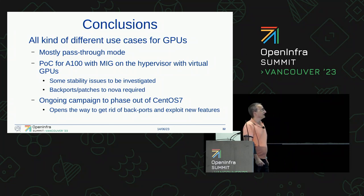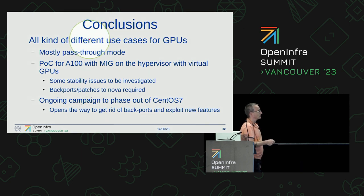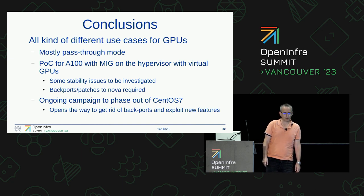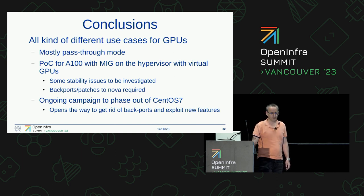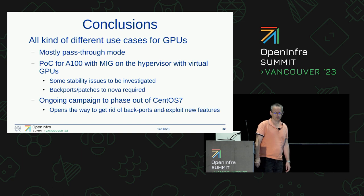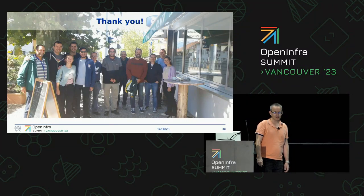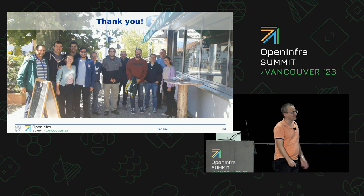Coming to the conclusions: we are running a whole zoo of different GPUs and we have a whole zoo of different use cases — one of them is sticking out, of course, but that may change in the future. Our workhorse is PCI pass-through mode. We have a proof of concept for A100s with MIG on the hypervisor, exporting the GPUs to individual virtual machines. And the top priority at the moment for the whole team is to phase out CentOS 7 and go for Red Hat 8. Thank you.